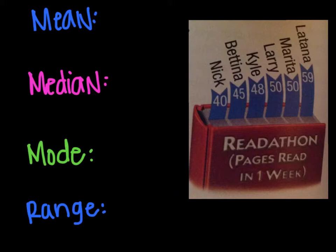What we're going to do now is find the mean, median, mode, and range for this readathon. As you can see, the people and what they have for pages read is listed next to their name. And so the first thing we're going to do is find the mean. The mean, if you remember, is the average, so we're going to add up all the digits.